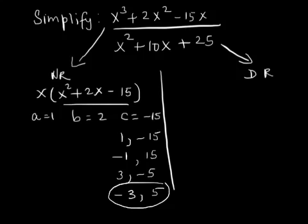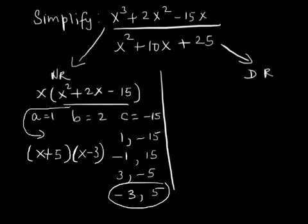We will now try to write the numerator using these two numbers. Since a is equal to 1, using these integers, we can quickly write the factored form of x squared plus 2x minus 15 as x plus 5 times x minus 3. The numerator is therefore written in the factored form x times x plus 5 times x minus 3.